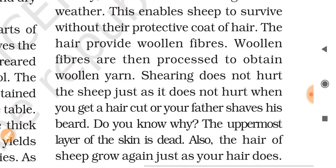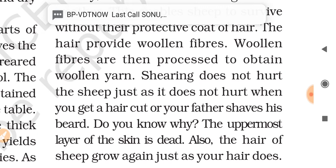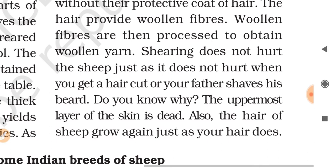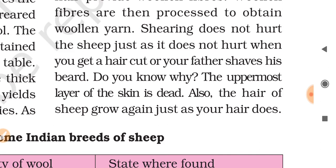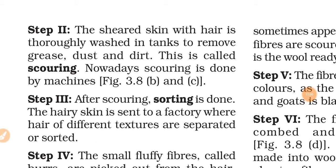The hair provides woolen fibers, which are then processed to obtain woolen yarn. Shearing does not hurt the sheep, just as it does not hurt when you get a haircut. The uppermost layer of skin is dead. The hair of the sheep also grows back, just as your hair does. In the second step, the sheared skin with hair is thoroughly washed in tanks to remove grease, dust, and dirt. This is called scouring, and nowadays scouring is done by machines.